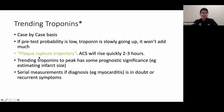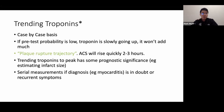Troponin trending can be useful when the diagnosis is uncertain — for example, in suspected myocarditis or pericarditis with atypical chest pain — to ensure there's no concomitant ACS. Otherwise, there's limited utility. Other modalities exist to estimate infarct size.